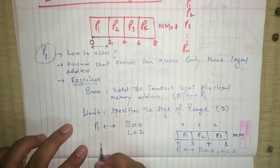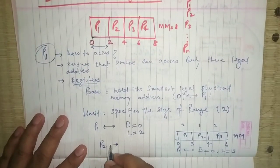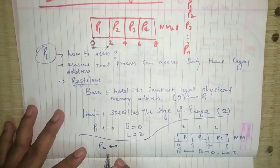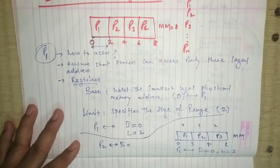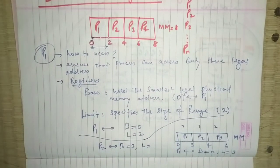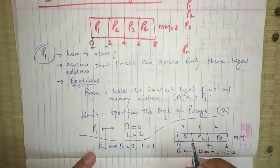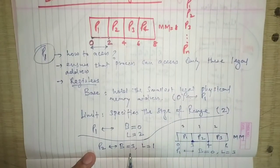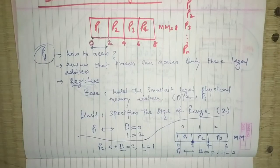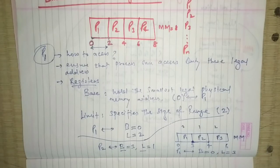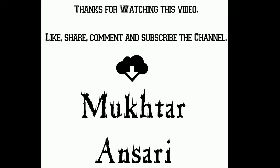For P2, the base register will hold 3 — since P2 starts from address 3 — and the limit register will hold 1, representing its range of one unit. So the base and limit registers clearly tell you where a process is situated in memory and how large it is. Using base and limit registers, anyone can easily find where a process is located.